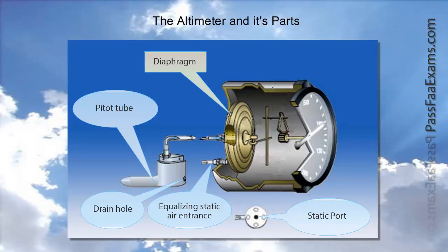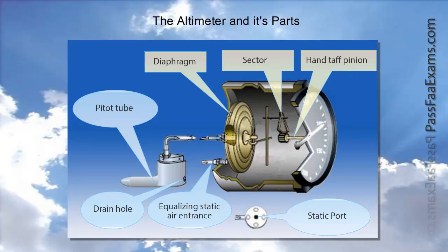The diaphragm, in turn, is connected through levers to the sector which is connected to the hand half pinion. And now that we've seen how the airspeed indicator is built, let's see how it actually works.